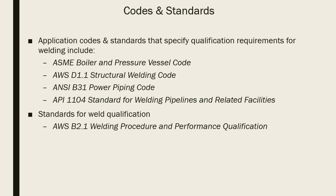Codes and standards that specify qualification requirements for welding include ASME Boiler and Pressure Vessel Codes, AWS D1.1 structural welding code, ANSI B31 power piping codes (B31.1, B31.3, etc.), and API 1104 standard for welding pipelines and related facilities. Each one has a specific set of criteria for their qualification processes — generally the same, but with specific nuances. Also, AWS B2.1 welding procedure and performance qualification is an overall document covering general qualification of welding procedures and welders.